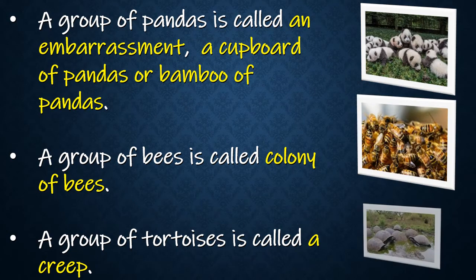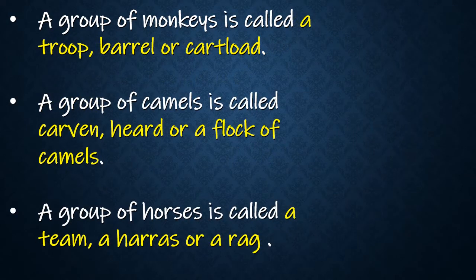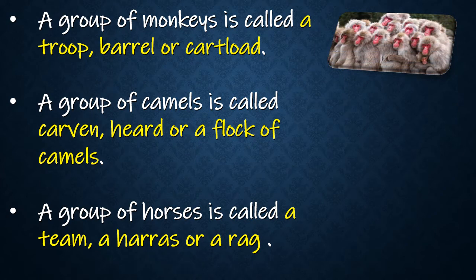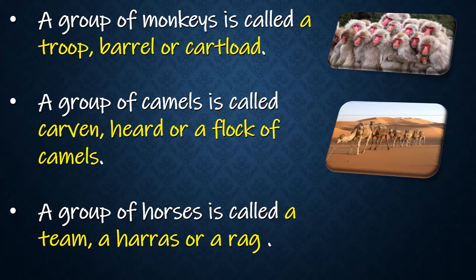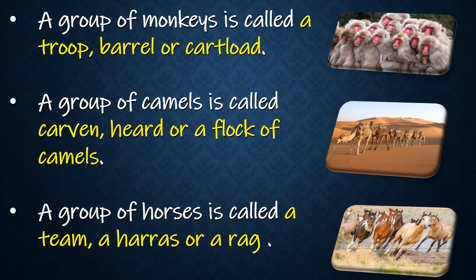A group of tortoises is called a creep. A group of monkeys is called a trip, barrel, or cartload. A group of camels is called a garden, herd, or flock. A group of horses is called a team, a harness, or a rag.